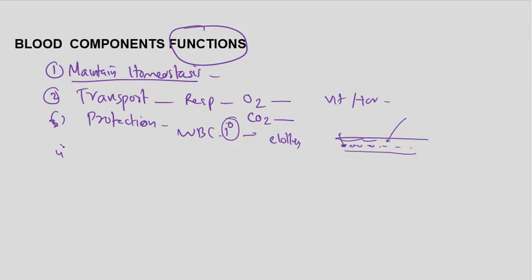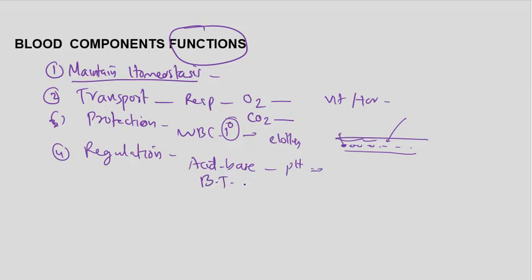The fourth function is regulation. Blood regulates cellular functions including glucose levels, carbon dioxide, and acid-base balance — that is, pH regulation. This is done through the buffering system. Blood also regulates body temperature and maintains water levels and blood pressure.